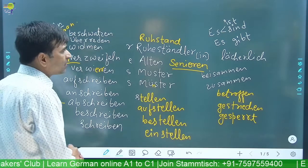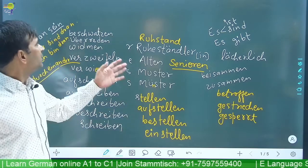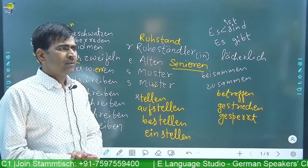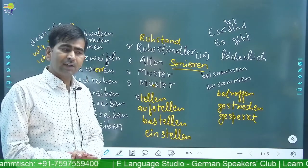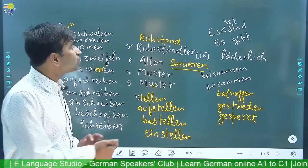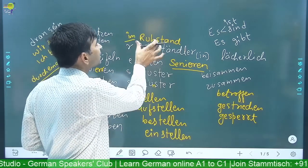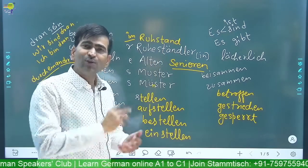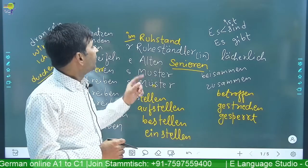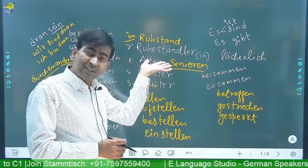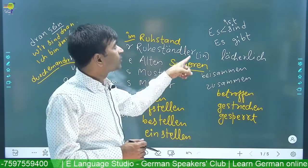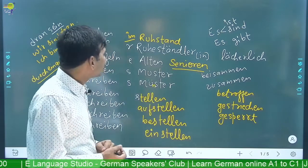Ruhestand means when someone is on pension. Koi banda agar pension pe hai — so er ist im Ruhestand. Im Ruhestand, Ruh means peace, shanti kaal chal raha, uska yudh kaal khatam ho gaya. Ab shanti kaal chal raha — Ruhestand. Und Ruheständler means the person who is in pension. Ruheständler, and female: Ruheständlerin — die Ruheständlerin.